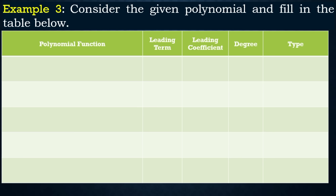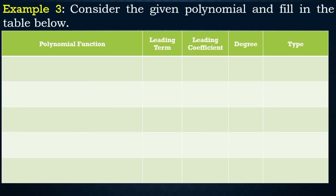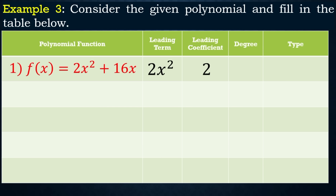Let's fill in a table. For example 1, f(x) = 2x(x + 8) — expand to get f(x) = 2x² + 16x. The leading term is 2x², the leading coefficient is 2, the degree is 2, and the type of polynomial is quadratic — when the highest exponent is 2, we call it quadratic.